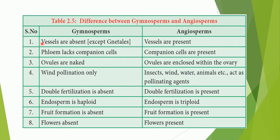The first difference: in gymnosperms, flowers are absent, whereas in angiosperms, flowers are present. In gymnosperms, fruits are also absent, whereas in angiosperms, fruits are present. Coming to pollination, in gymnosperms, pollination only occurs by wind, whereas angiosperms can be pollinated by any means — wind, water, animals, etc. In gymnosperms, the ovules are naked, meaning they are exposed to the surroundings, whereas in angiosperms, they are enclosed within the ovary. Coming to conducting tissues — both xylem and phloem — in gymnosperms, phloem does not have companion cells, but angiosperms do have companion cells. In xylem, vessels are absent in gymnosperms, whereas vessels are present in angiosperms.